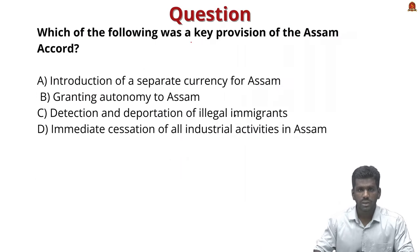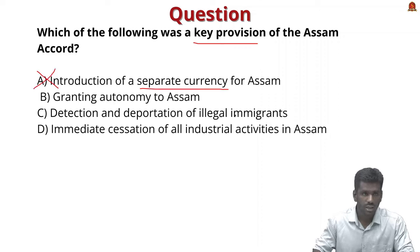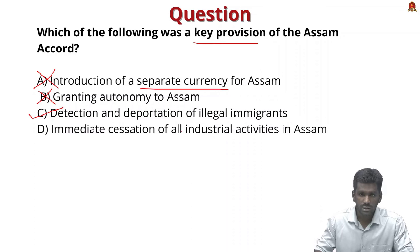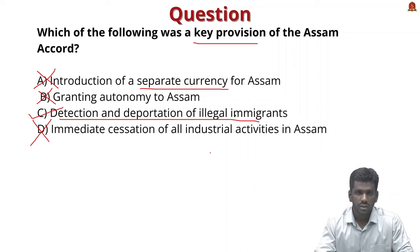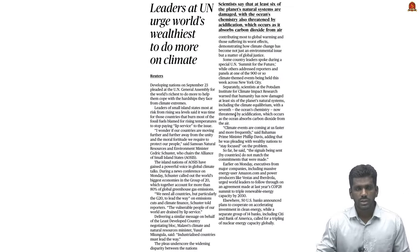MCQ on Assam Accord: Which of the following was a key provision? Option A — introduction of a separate currency for Assam — incorrect. Option B — granting autonomy to Assam — incorrect. Option C — detection and deportation of illegal immigrants — correct, as discussed. Option D — immediate cessation of all industrial activities in Assam — incorrect. The correct answer is detection and deportation of illegal immigrants.